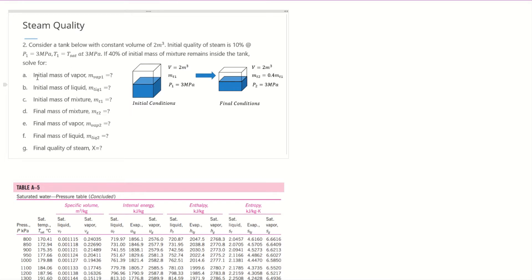We need to solve for Mvap1 (initial mass of vapor), Mliquid1 (initial mass of liquid), MT1 (initial total mass of mixture), MT2 (final mass of mixture), Mvap2 (final mass of vapor), Mliquid2 (final mass of liquid), and the final quality of steam — denoted with big letter X, since the initial quality uses small letter x.